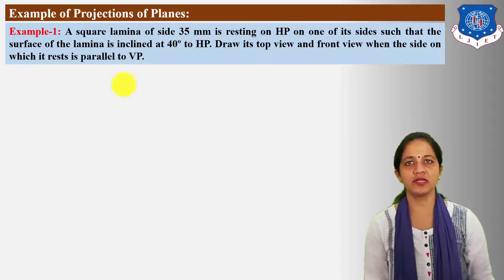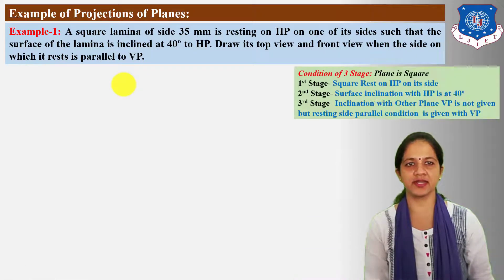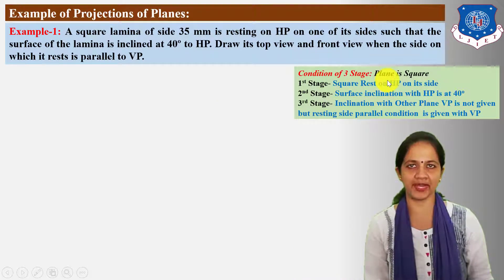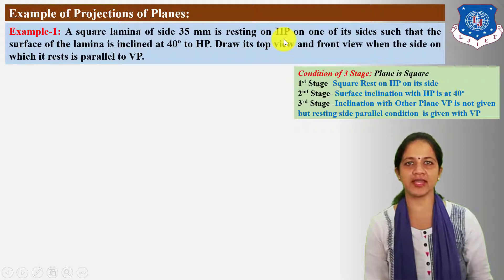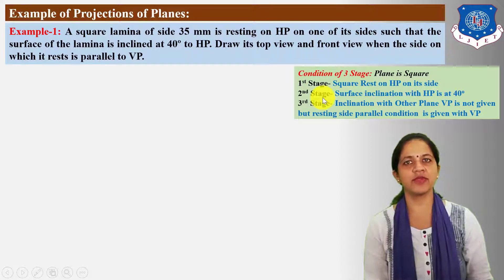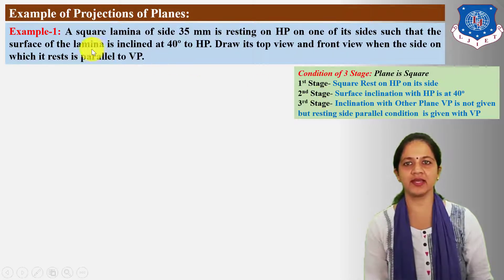First, list out the given three-stage conditions. The plane or lamina is square. The first stage condition is given: the square plate is resting on HP on one of its sides. In the second stage, as per the rule, we need to take the angle condition with HP, which is given as 40 degrees.